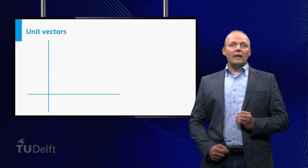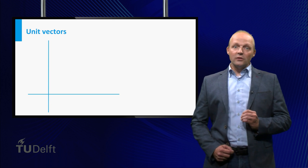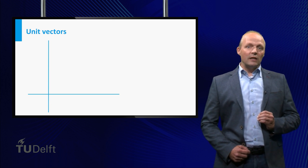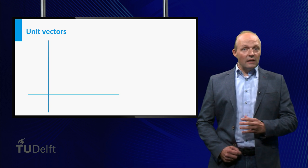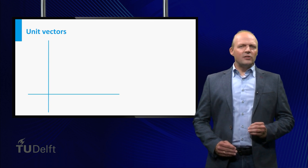Unit vectors are vectors with length 1. All non-zero vectors can be decomposed in a unit vector, determining its direction and its length. Let's see how this works.